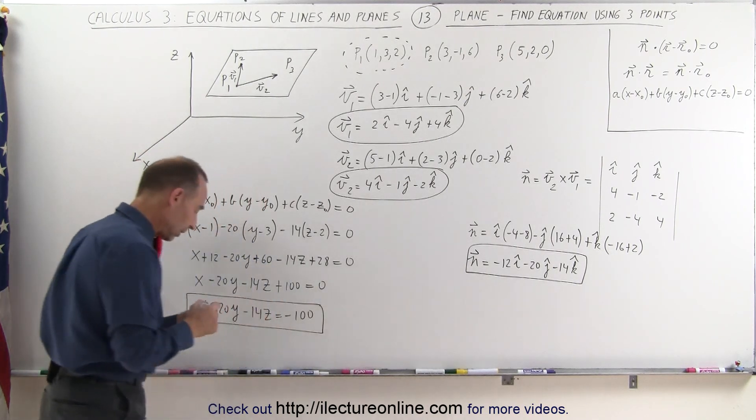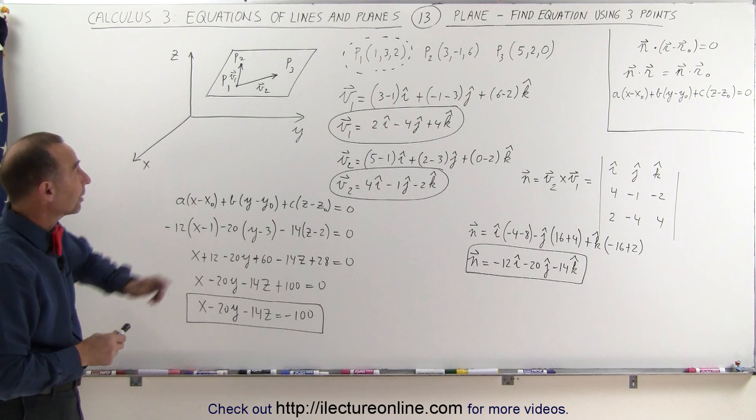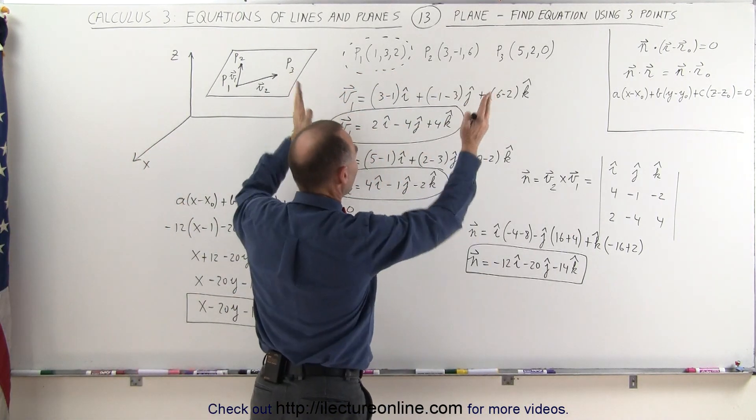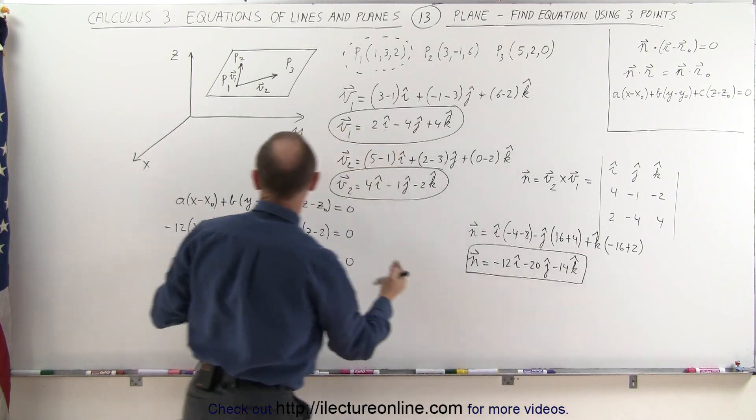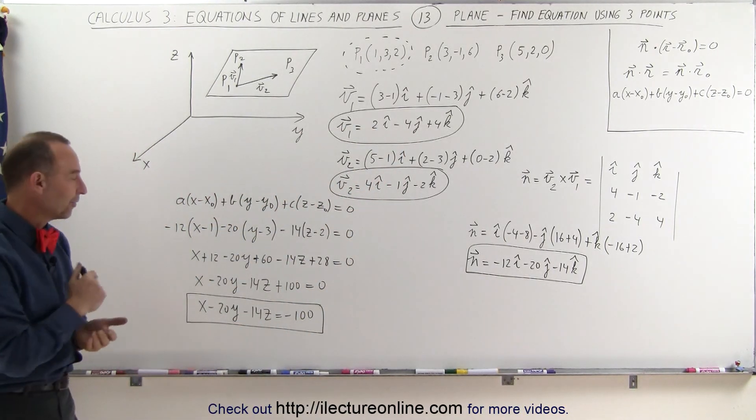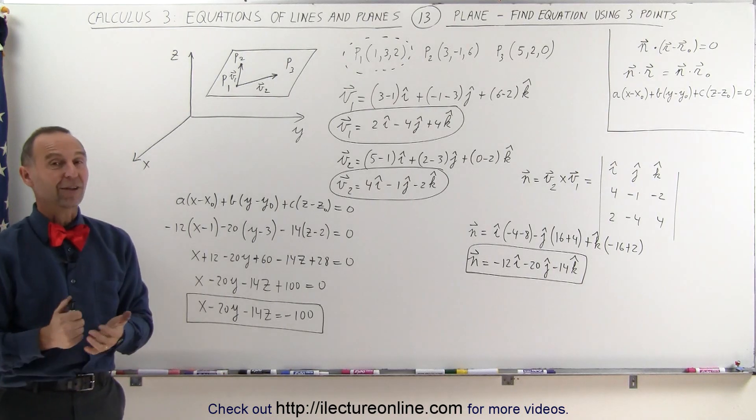And that would then be the equation of this particular plane. Again, provided that the points on the plane are point 1, point 2, point 3, using that to find our orthogonal vector, and then using this equation to find the scalar equation of that particular plane. And that's how that's done.